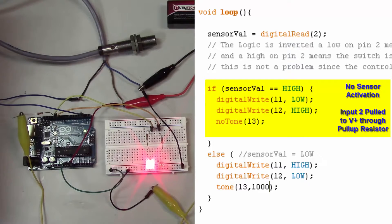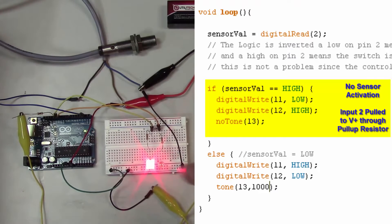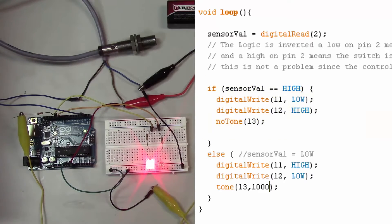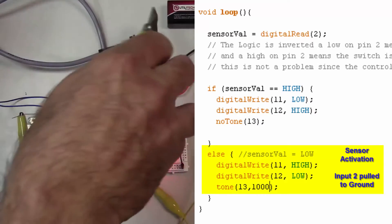So if it's high, then we want our pin 11 to be low, and that's this LED right here. We want pin 12 to be high, that's hooked to our red LED. And we don't want any tone under those circumstances either. The other situation, the other possibility is we do have the sensor activated.